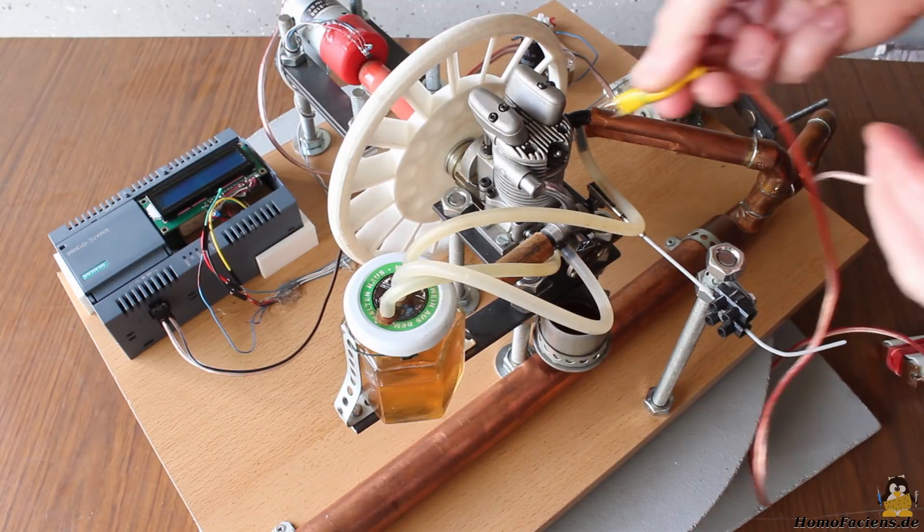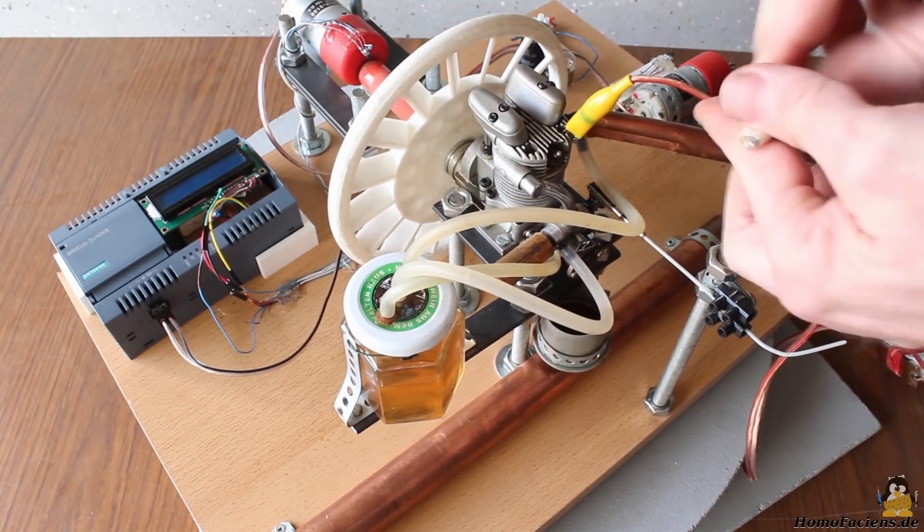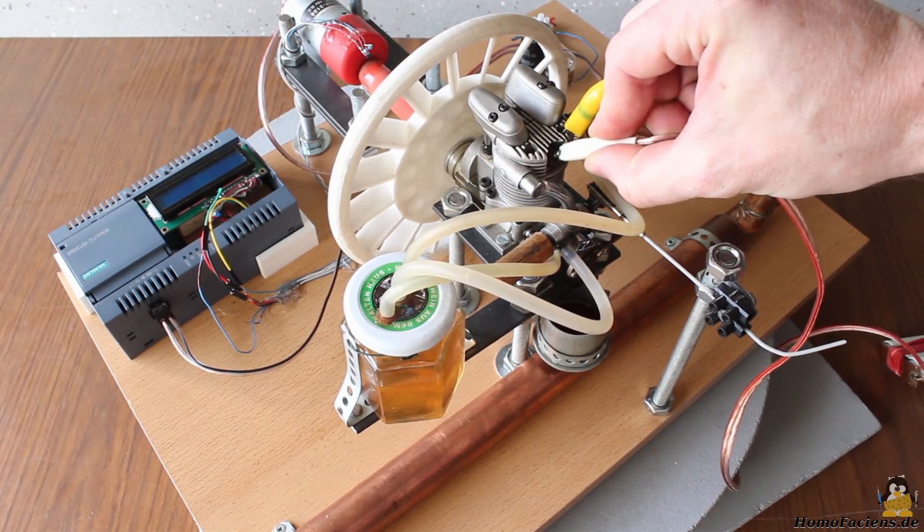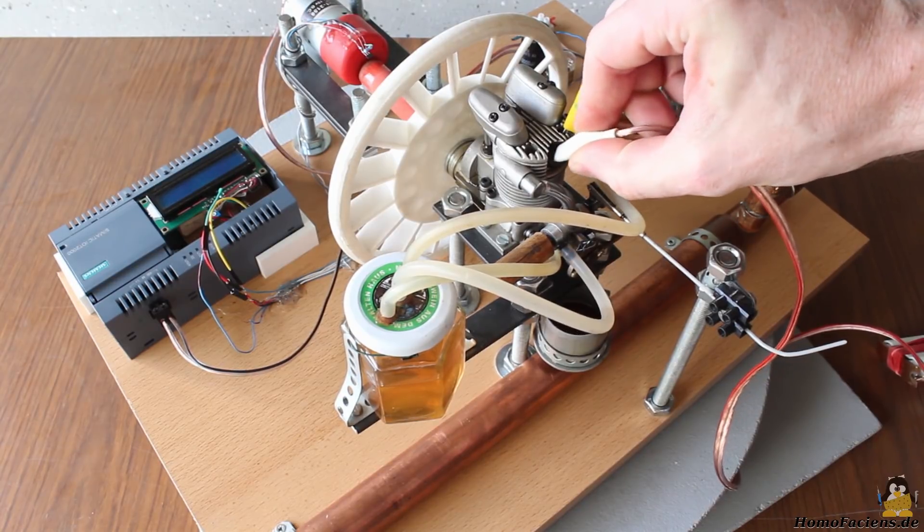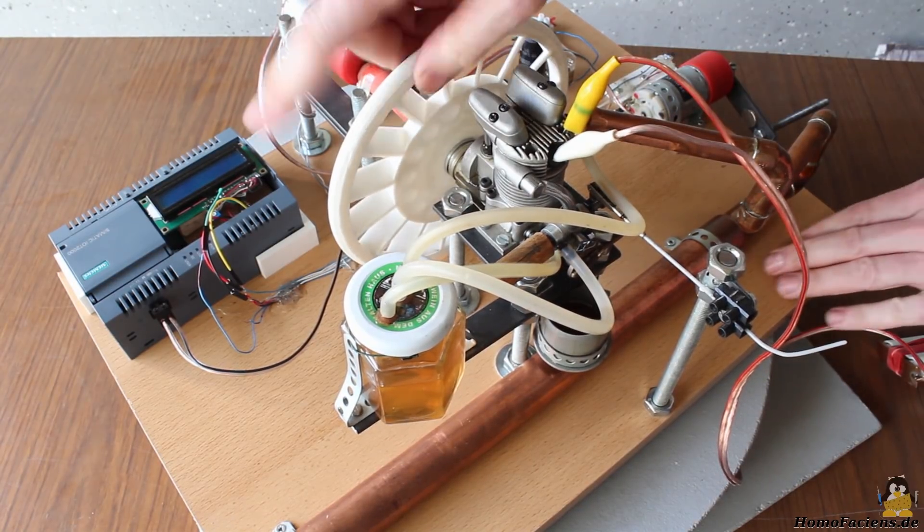Again I'm using the Simatic first. To start the motor, the glow plug must be heated by two AA batteries. This electric circuit is insulated from the input voltage of the Simatic.